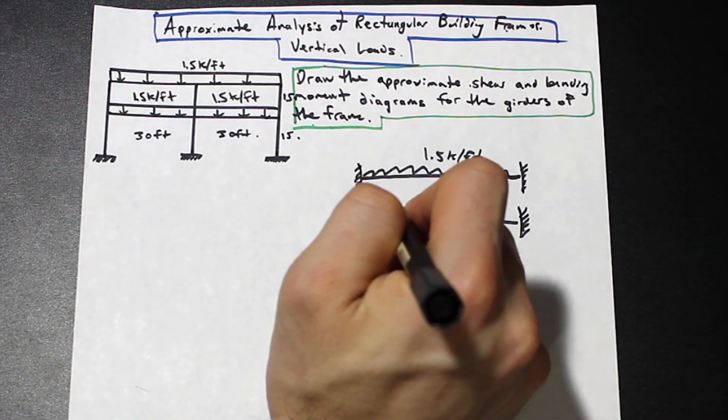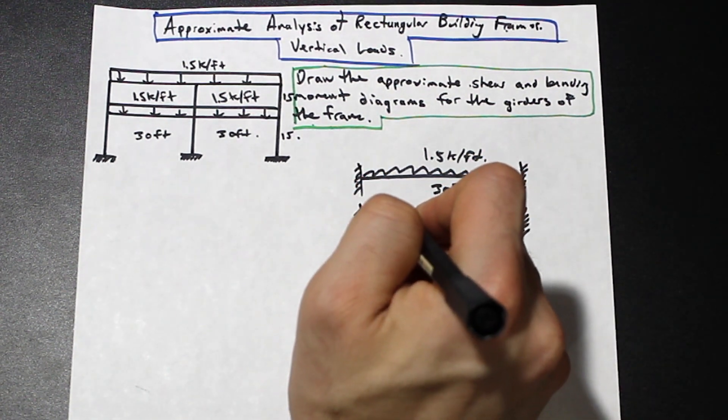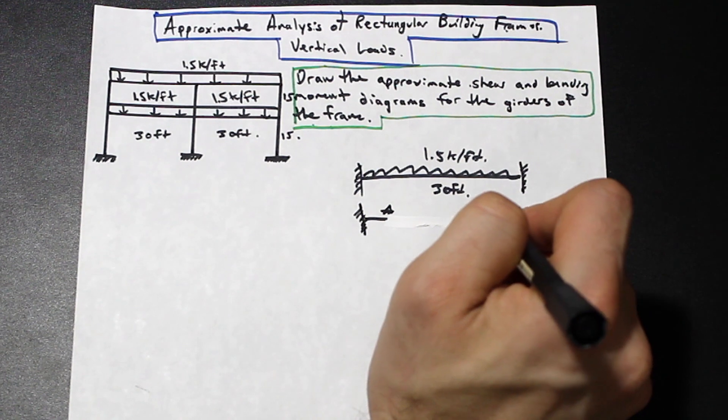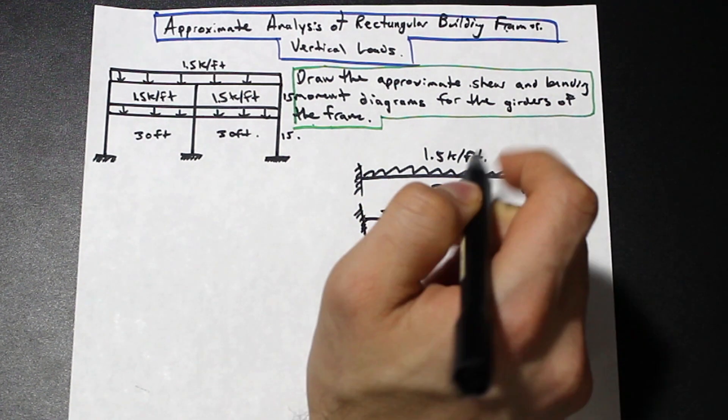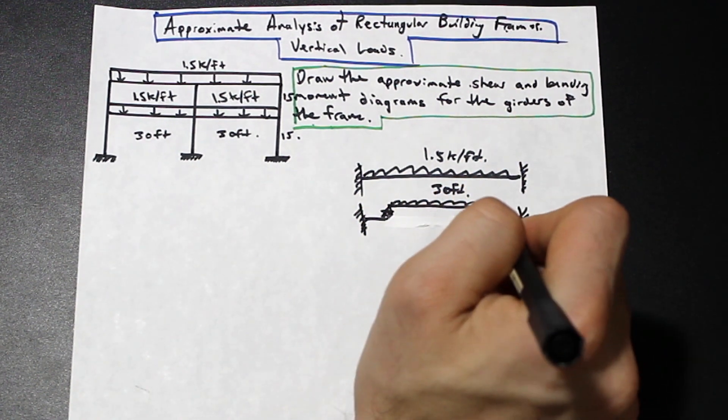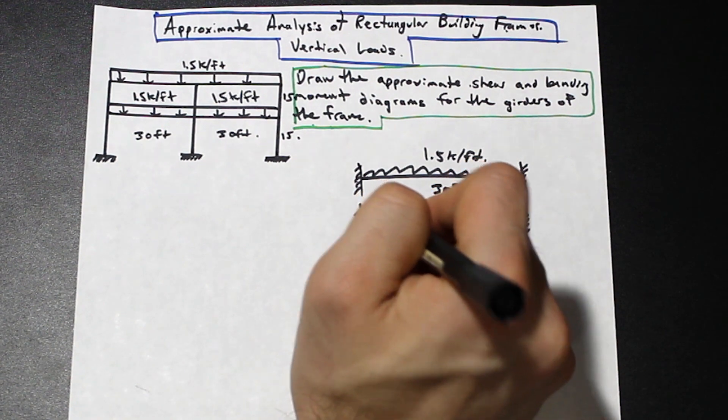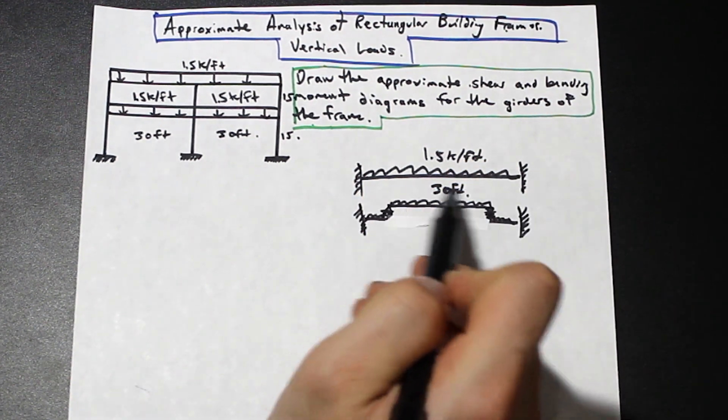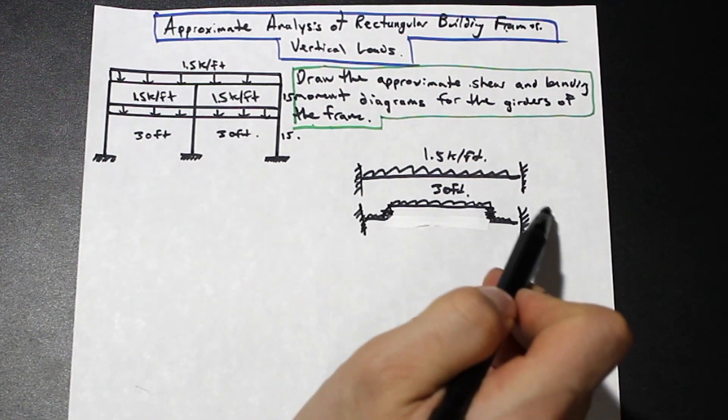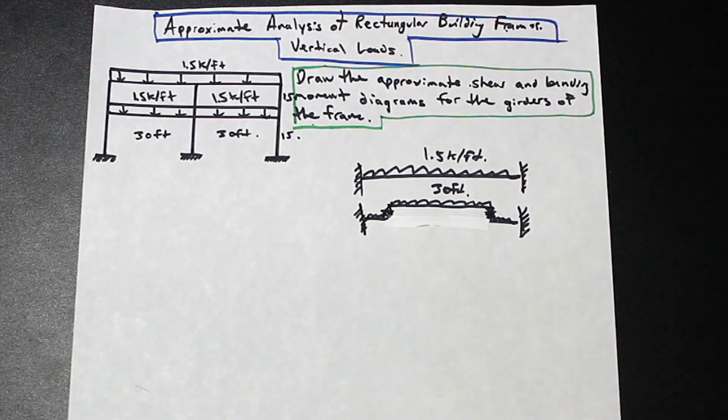What we're going to do is we're going to at the inflection points place a pin and we're going to place a roller, like this, on the beam. And as you can see, we have a simply supported beam here and then we have two determinate beams here and we can solve this.